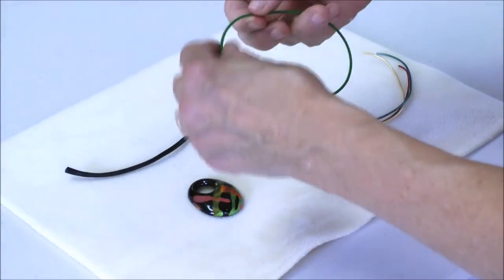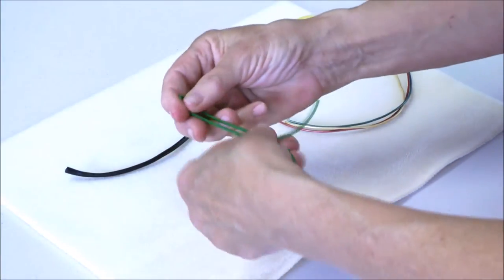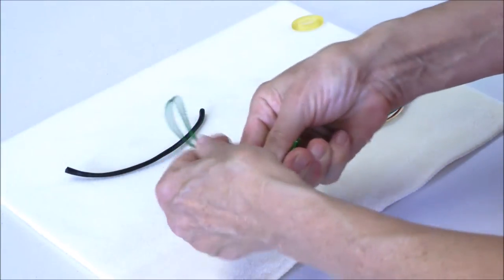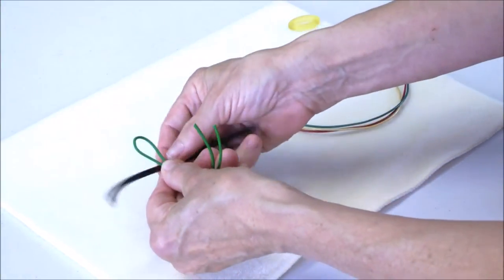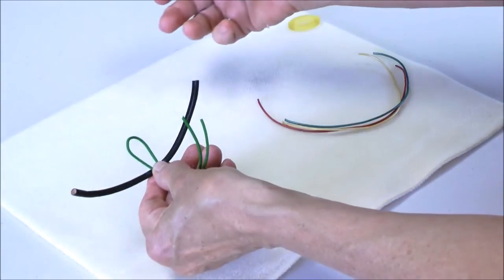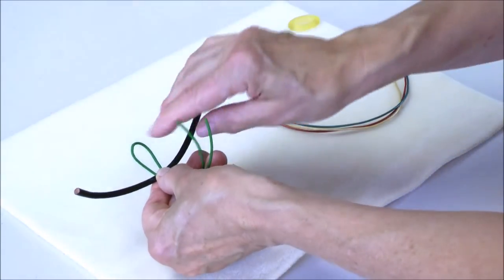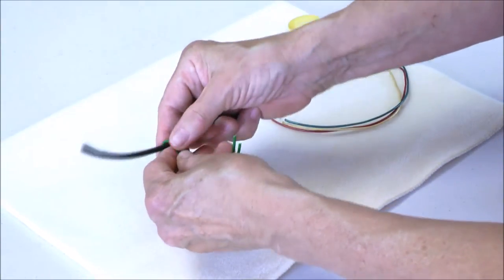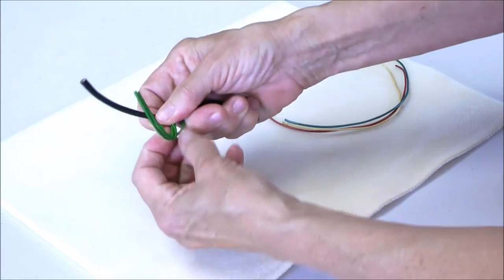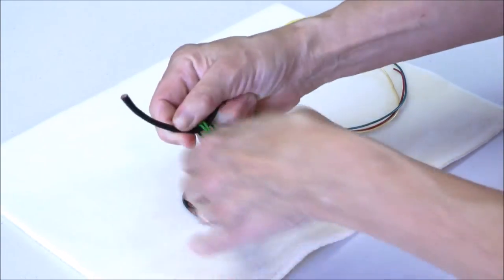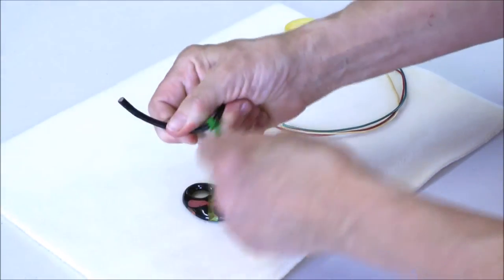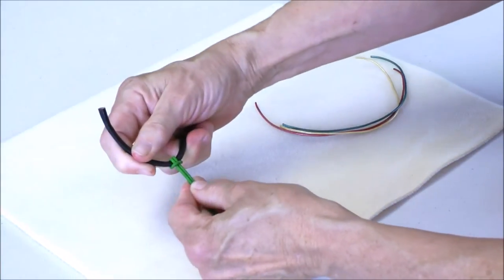So again I'm going to do a lark's head knot. I have a piece of green leather here and I will fold it in half. This time I'm going to actually put the loop over my bracelet leather, bring it around to the back, push those tails through, pull it tight and I have a lark's head knot.